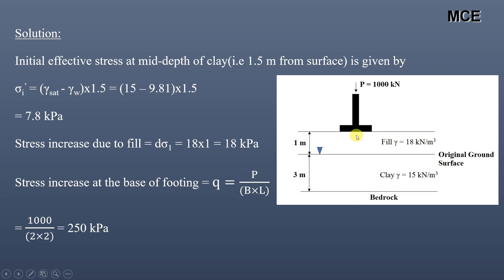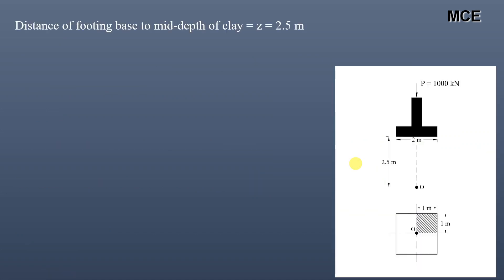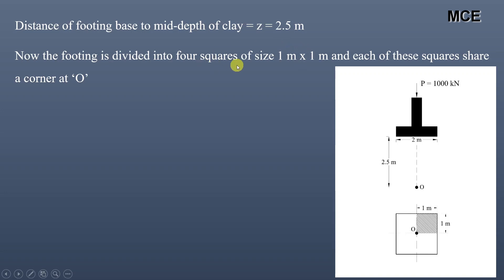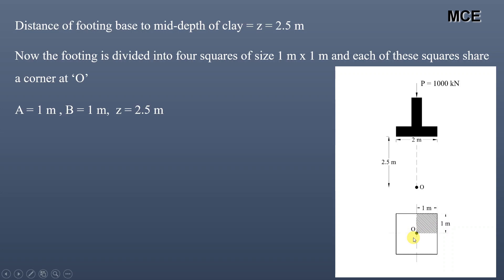Since we have to find the stress increase at the mid-depth of the clay exactly at the center of the footing, we proceed as follows. The distance from the footing base to the mid-depth of clay is z = 2.5 meters. The footing is divided into four squares of size 1 meter × 1 meter, and each of these squares shares a corner at point O. We will find the stress increase at z = 2.5 meters due to this 1 m × 1 m square footing at corner O.